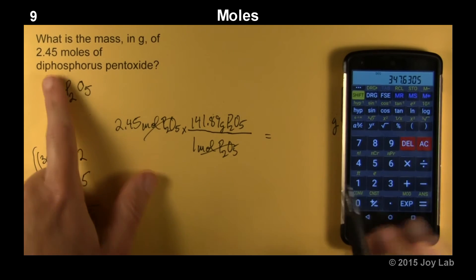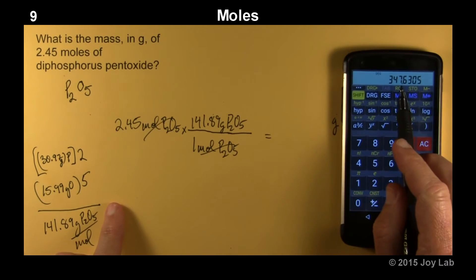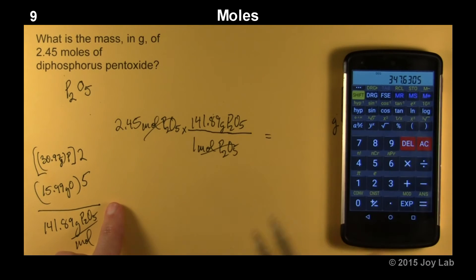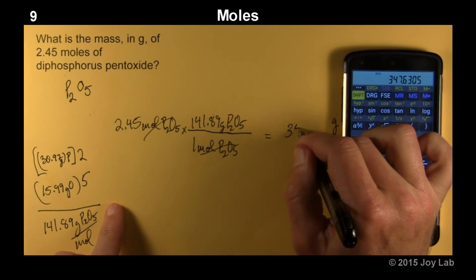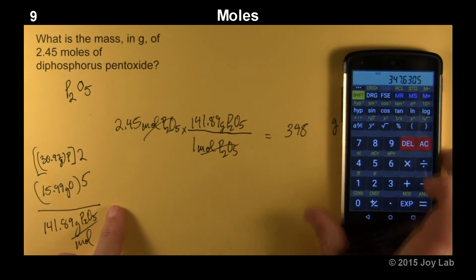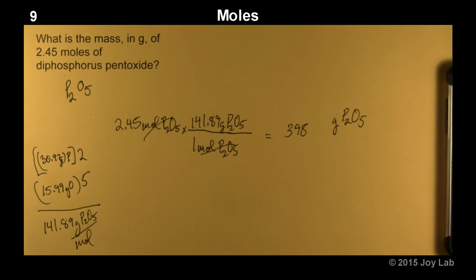How many sig figs? 3 sig figs. 1, 2, 3, 6 is going to make the 7 an 8. So 348 grams. Moles cancel.